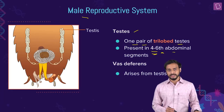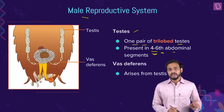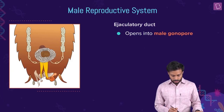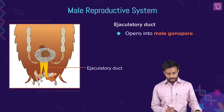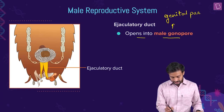The next structure is the vas deferens, which arises from the testis. The vas deferens opens into the ejaculatory duct. This is the ejaculatory duct shown here — the testis connects via the vas deferens into the ejaculatory duct of the cockroach.